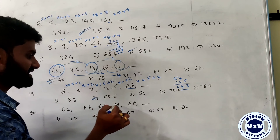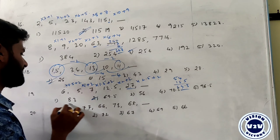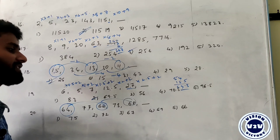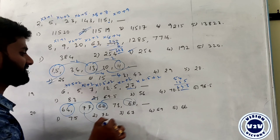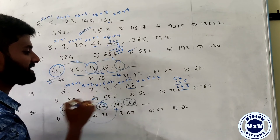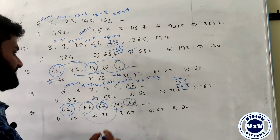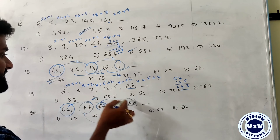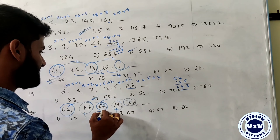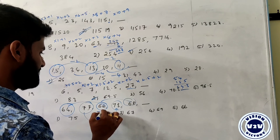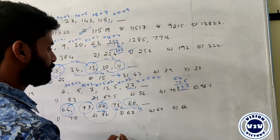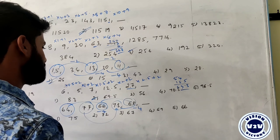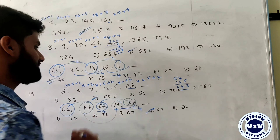Next: 64, 77, 66, 73, 68. This is an alternating series: 64, 66, 68 increase by plus 2, and 77, 73 decrease by minus 4. So the next even-position term is 73 minus 4 = 69. The answer is 69. Thank you.